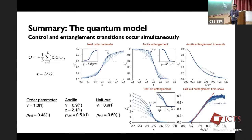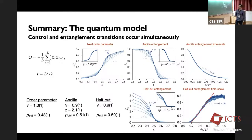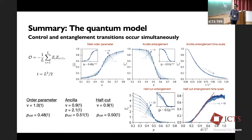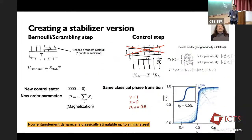As a summary, we're able to extract all of these exponents which match very well with what we know from the classical transition itself. But now we're able to put quantum information into the ergodic side, and it's quite robust. As the last part, I'll explain a little bit of what we did for the stabilizer version.